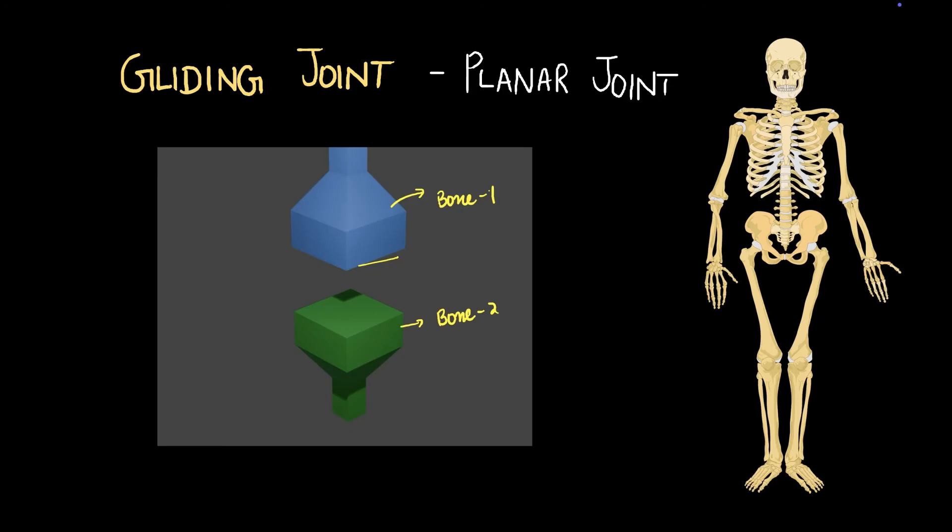Okay, you can see how that works. They share a surface and they can move front and back, right, in this direction, but they can also move in this direction. So that's both left, right, and front, back, and a combination of both.